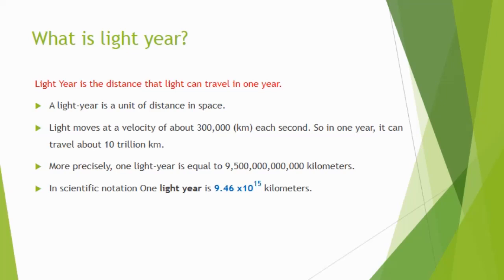A light year is a unit of distance in space. Light moves at a velocity of about three lakh kilometers per second, so in one year it can travel about ten trillion kilometers. More precisely, one light year is equal to nine point five trillion kilometers.